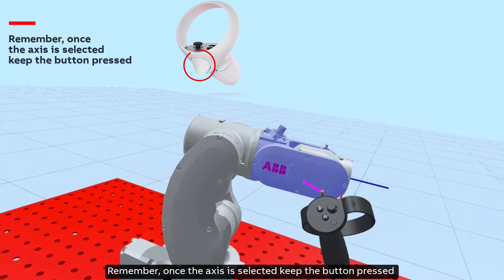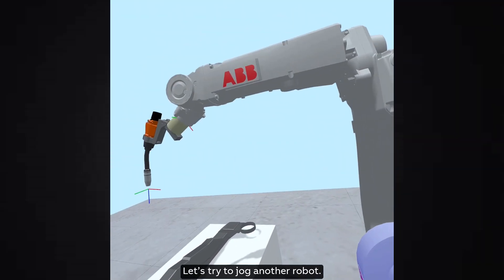Remember, once the axis is selected keep the button pressed and move the axis in the desired direction. Let's try to jog another robot.